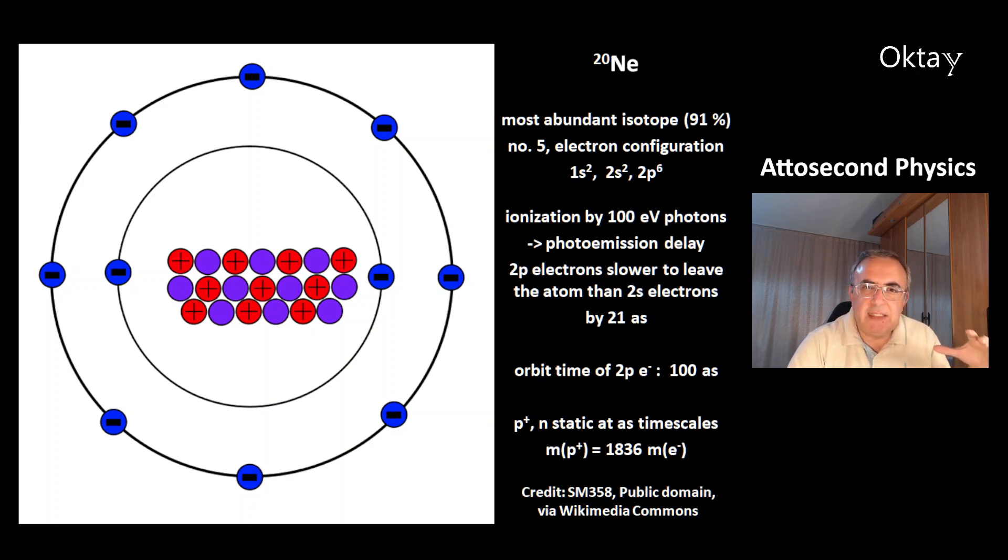At this time scale, the much more massive protons and neutrons can't do anything, they are static. Because, for example, the mass of the proton is 1836 times the mass of the electron.